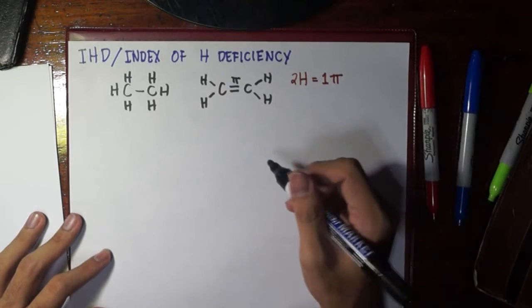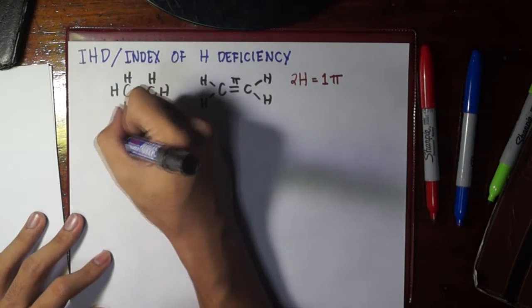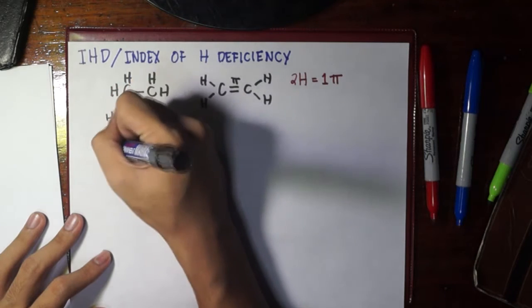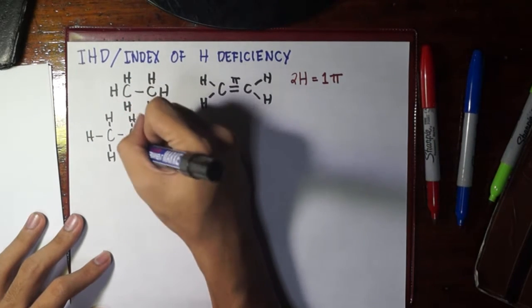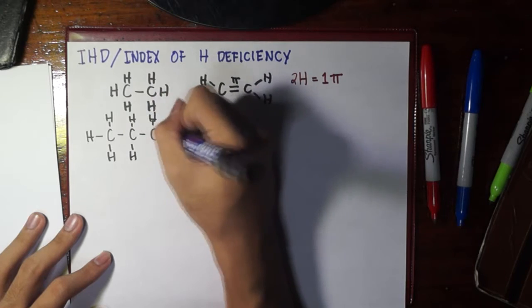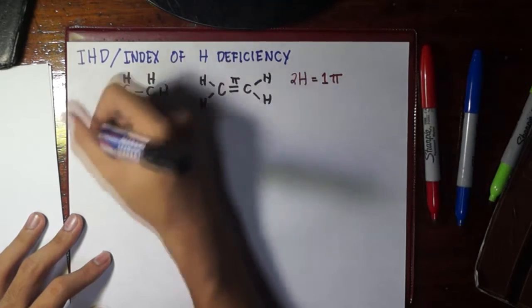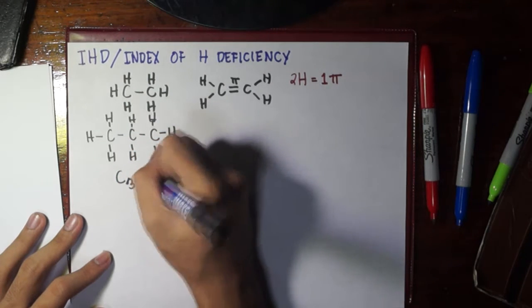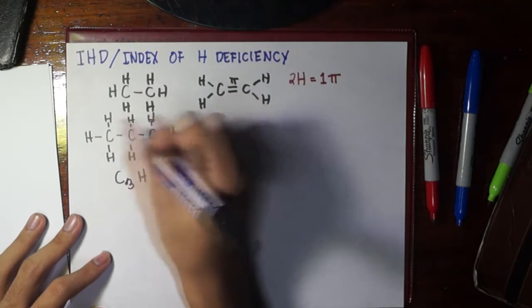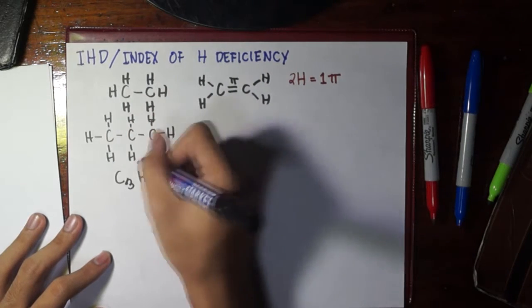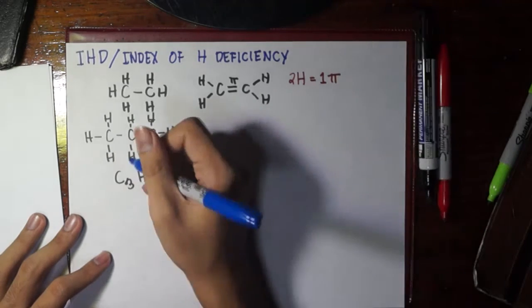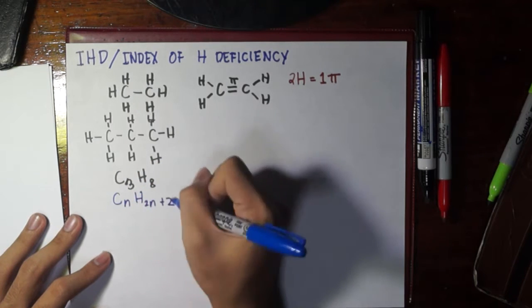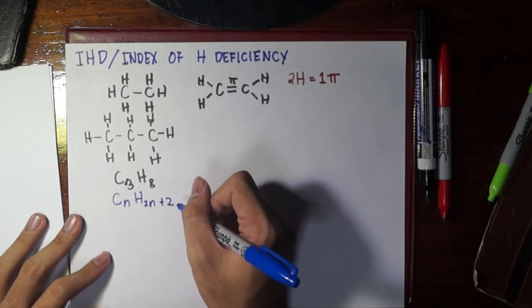Now, let's try to have another example. Let's draw propane first. So, this is the structure of propane. Its molecular formula is C3H8. So, from this, we could actually recall the formula for a linear alkane, and that is CnH2n plus 2, wherein the n is the number of carbon atoms.